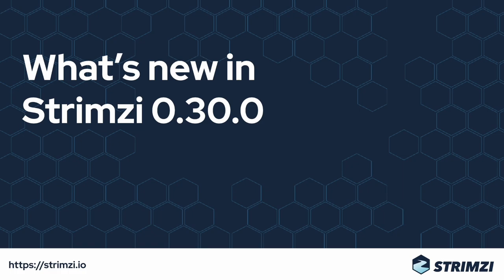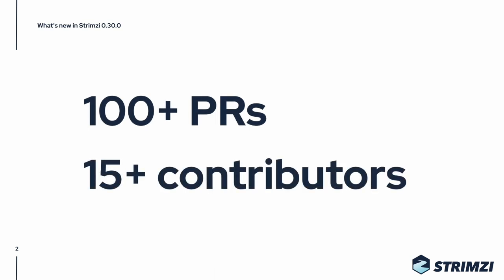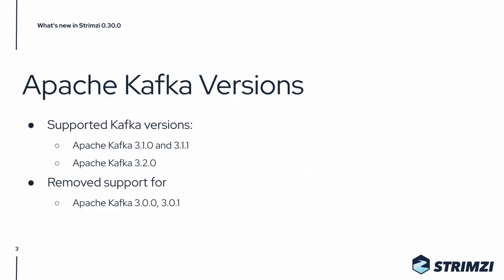StreamC 0.30 is out and as always we will have a quick look at what's new in this release. It has over 100 PRs from over 15 contributors — thanks to everyone who contributed. It supports Apache Kafka versions 3.1.0, 3.1.1, and 3.2.0, and removes support for Apache Kafka 3.0.0 and 3.0.1.